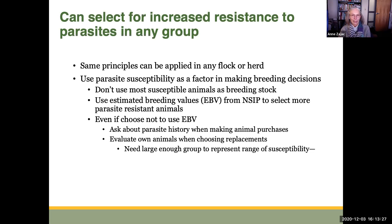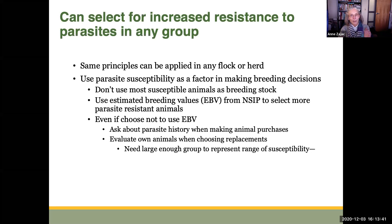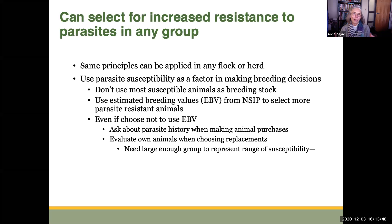Everybody should be doing this. Ask about the parasite history when making animal purchases — if a flock or herd has a lot of problems with worms, that may not be where you want to source new animals from. When looking at replacements for your flocks and herds, evaluate your own animals so you're making decisions incorporating parasite resistance. It's not the only reason to choose an animal, but it should be one.